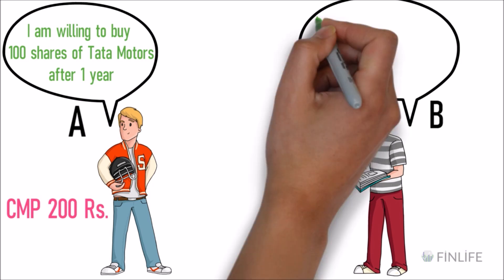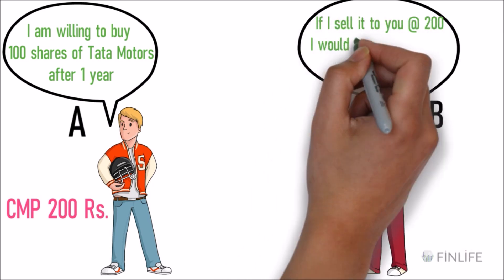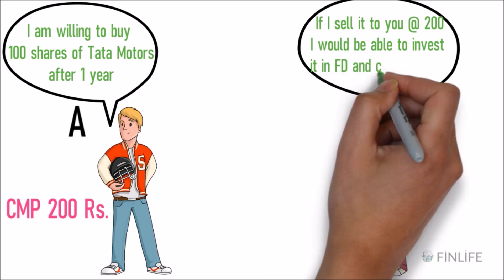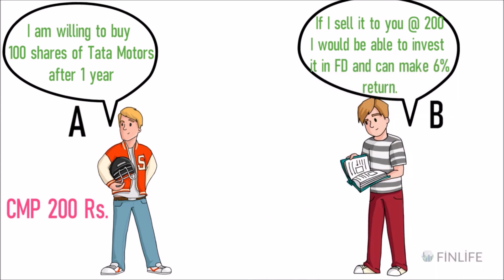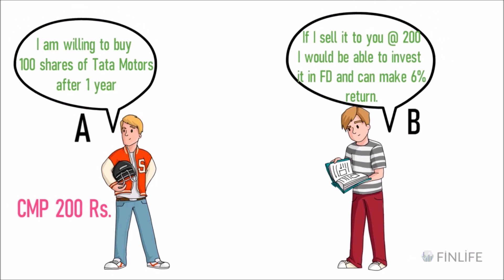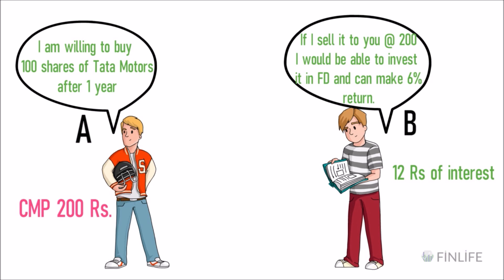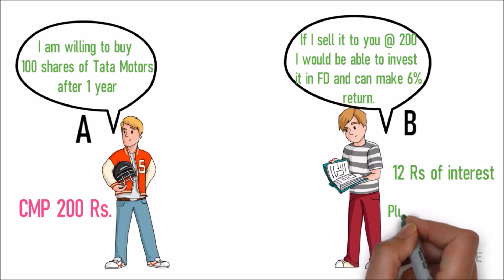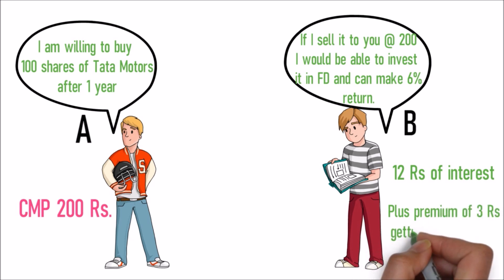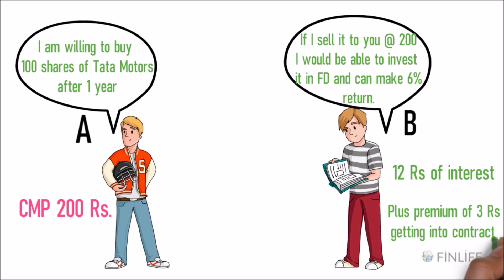The answer is no. B will say that if he sells the shares right now at 200 rupees, he can invest in an FD and earn approximately 6% return. So he won't sell at 200 rupees after one year — he wants the 12 rupees of interest he would be losing out on, plus a little more.